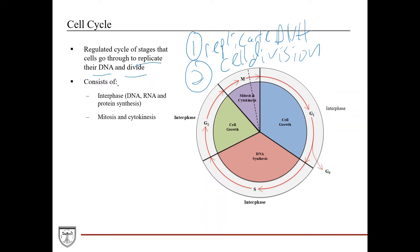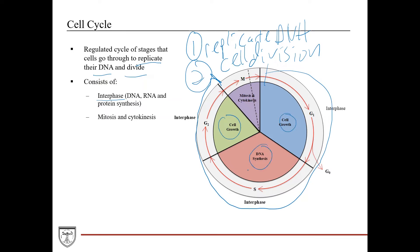The cell cycle consists of two major phases. You have interphase, which is really the majority of the cell cycle, and its purpose is to get ready for cell division. As part of that, you're going to do RNA and protein synthesis during the G1 and G2 phases, and then DNA synthesis during the S phase.